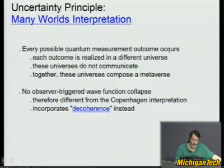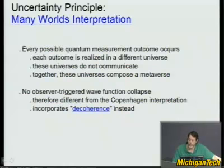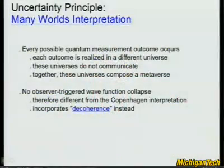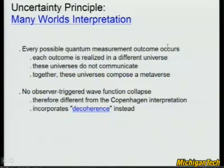The observer doesn't really trigger wave function collapse in many worlds — it's different from the Copenhagen interpretation. Although people sometimes struggle to explain why it's mathematically different, the mathematics is essentially being interpreted the same way many times. Instead of wave function collapse, the terminology used is that the wave function decoheres — decoherence occurs by information leaking from the quantum system outward. Each time that happens, another universe is created. That is the many worlds, or many universes, interpretation.